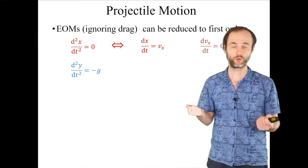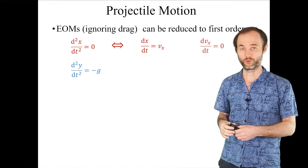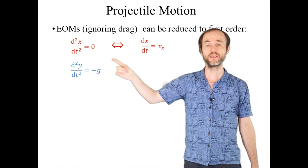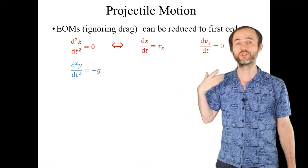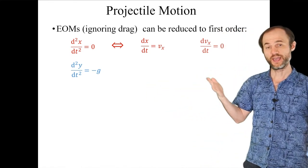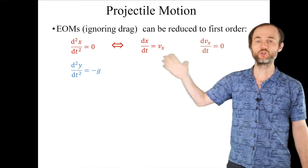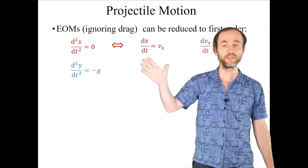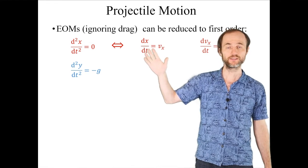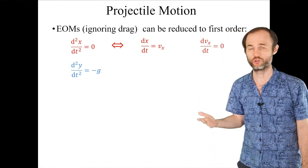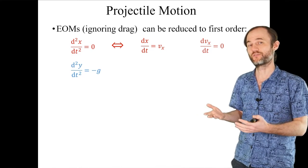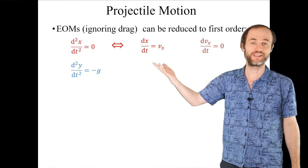We translate the second-order equation into a first-order set of ODEs because we only know how to solve first-order equations. We introduce velocity as a new variable: dx/dt = vx and dvx/dt = 0. These two equations are equivalent to the single second-order equation and are much easier to solve — we already have a solver for two species. You can think of x as species one and vx as species two.